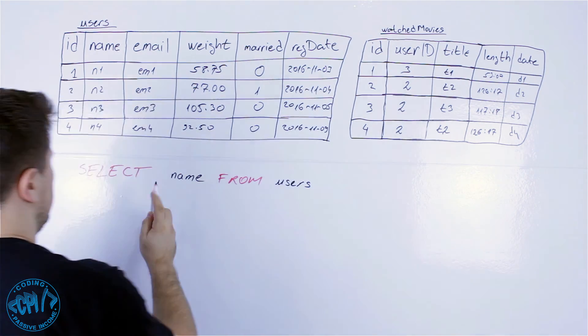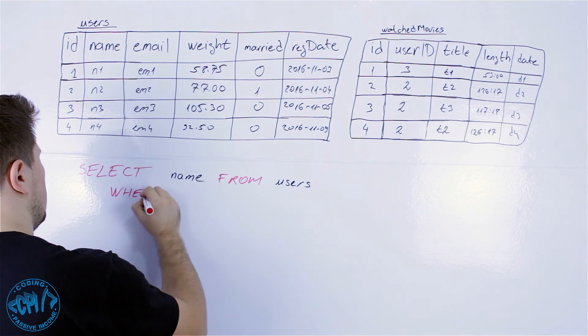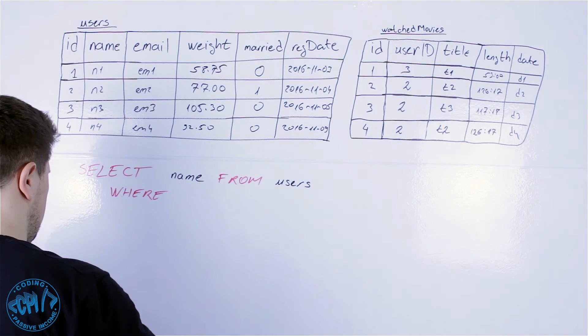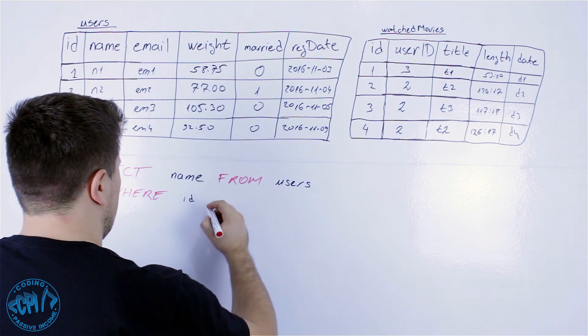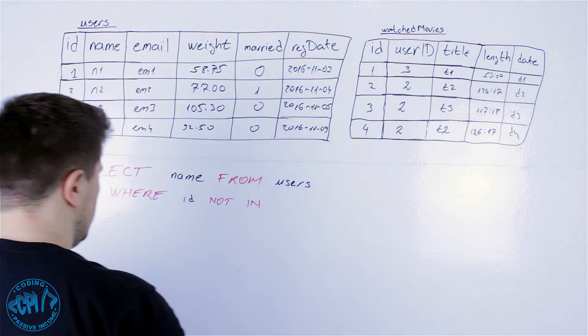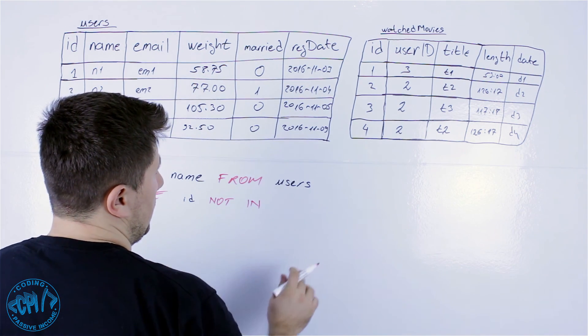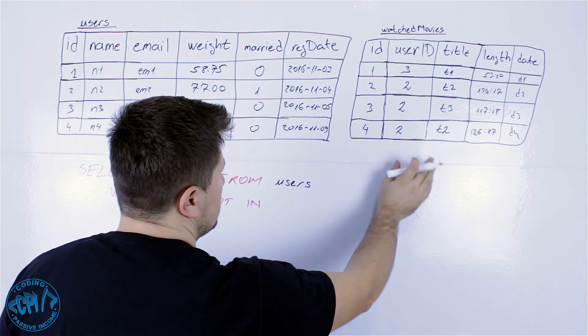I'll continue here where ID not in, and now I will write the subquery that will get all IDs from this table.